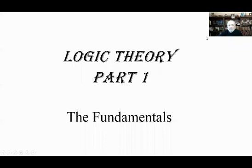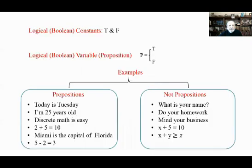Hello and welcome to Logic Theory Part 1: The Fundamentals. In logic theory we have two constants, true and false — T for true and F for false. Those are called boolean constants or logical constants. We also have a boolean variable, or logical variable, also called a proposition.